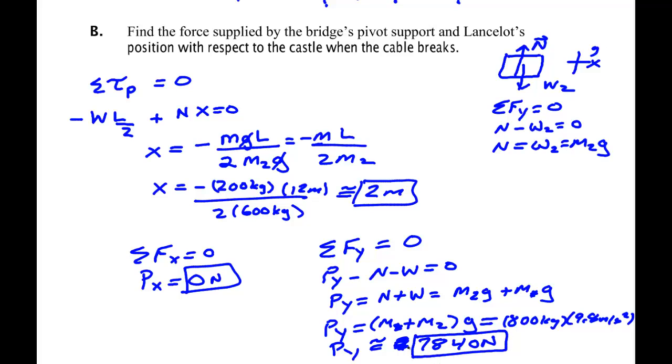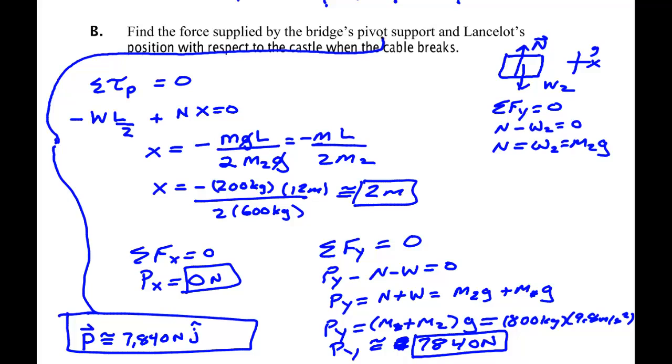So that was the three things I was asked for. The force supplied by the bridges pivot: 7,840 newtons j hat. So that's the answer to the pivot support. And Lancelot's position was 2 meters. That's what I was asked to solve. Alright. See you on another video.